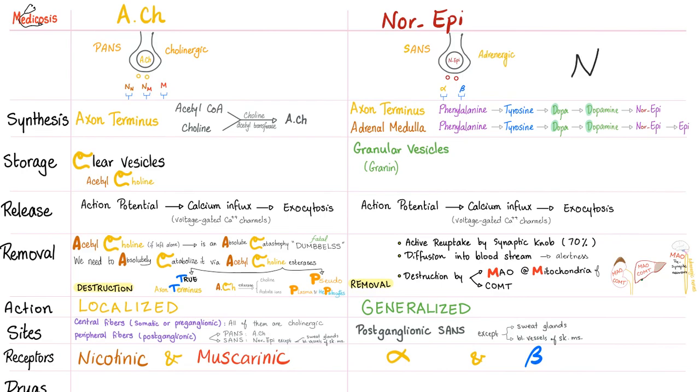It's phenylethanolamine N-methyltransferase because it adds a methyl group onto the norepinephrine, converting it into epinephrine. So literally, epinephrine is a methylated norepinephrine. This is deep. Deeper than my cleft.